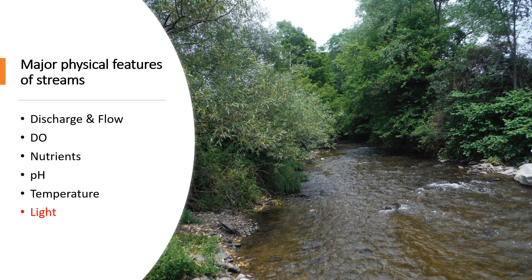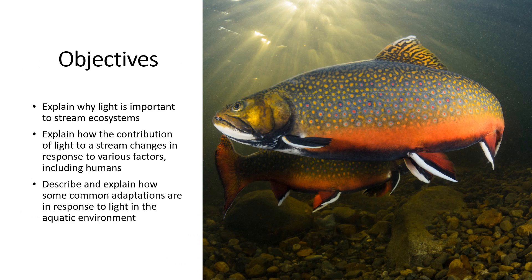As a reminder, we are moving very rapidly through our list of major physical features, and at the conclusion of this lecture we will be done with the major abiotic view of stream ecology and will move on towards a biotic view. The objectives are listed here. We need to understand why light is important to streams, explain how the contribution of light changes in response to a variety of different factors including humans, and I am going to introduce biology to a small degree by talking about adaptations to light in the aquatic environment.